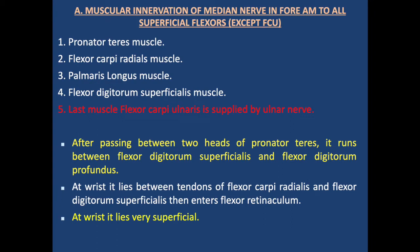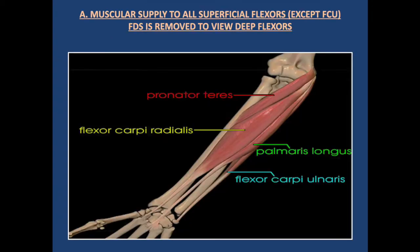At the wrist, the nerve lies between the tendon of flexor carpi radialis and flexor digitorum superficialis, then enters the flexor retinaculum. At rest, it lies very superficial under the skin. The nerve gives muscular branches to all flexors except flexor carpi ulnaris. This diagram shows the flexor digitorum superficialis removed to view all deep flexors.